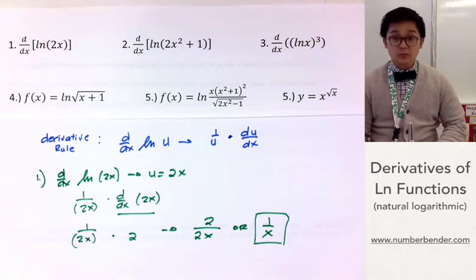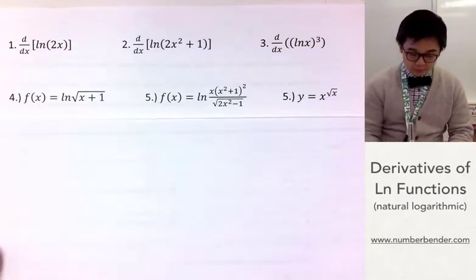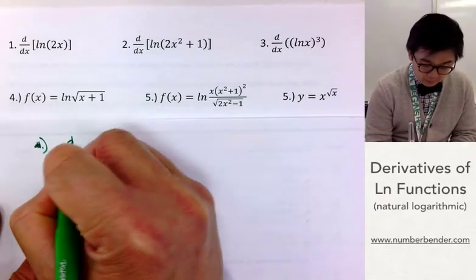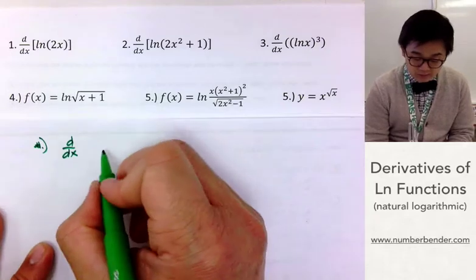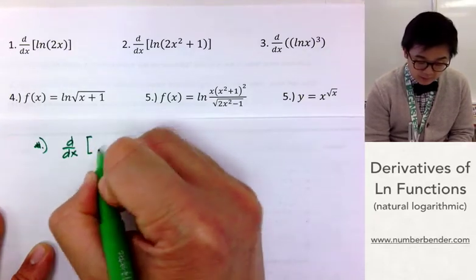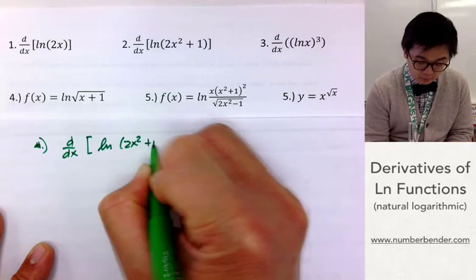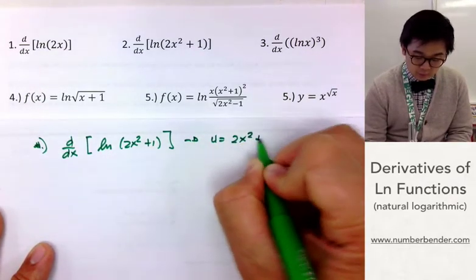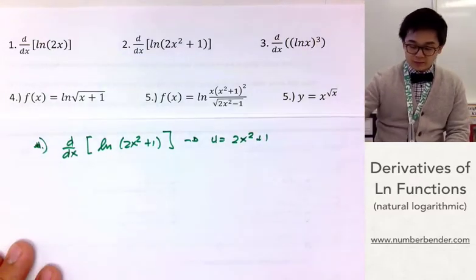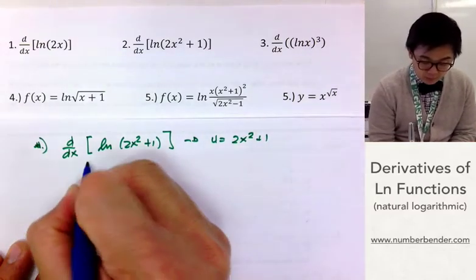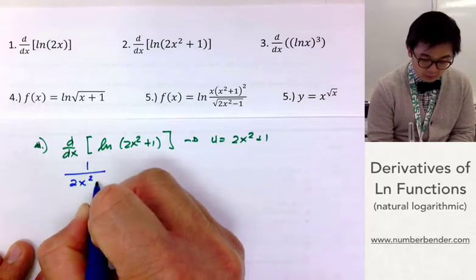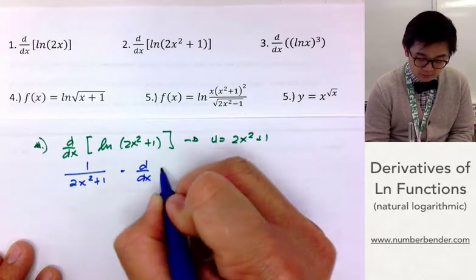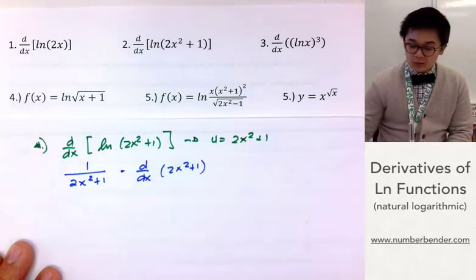Now let's go ahead and answer problem number 2. Our problem will be to take the derivative of ln(2x² + 1), and we know that u is 2x² + 1. To take the derivative of that, it will be 1 all over (2x² + 1) multiplied by the derivative of 2x² + 1.